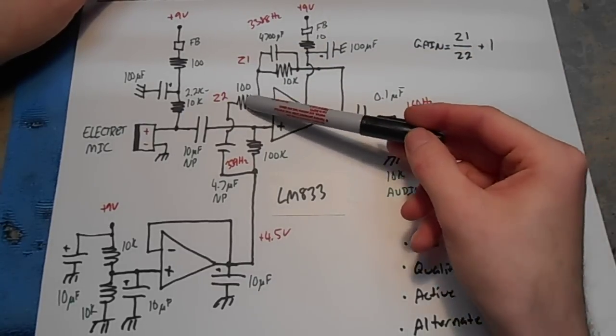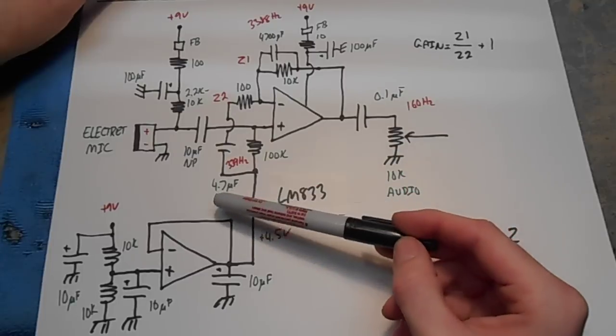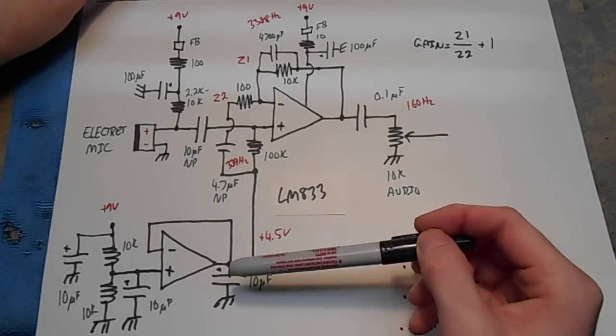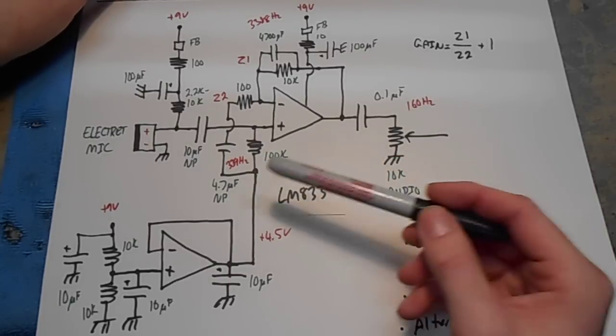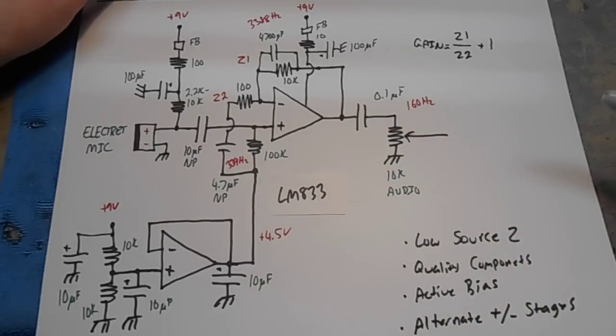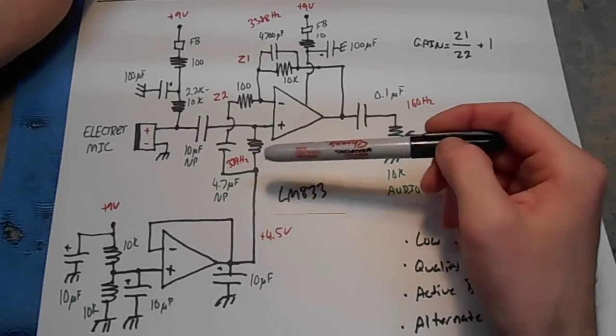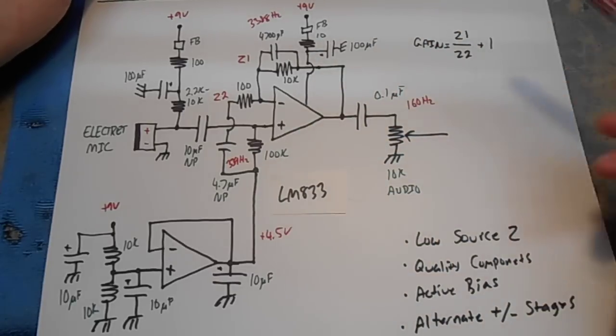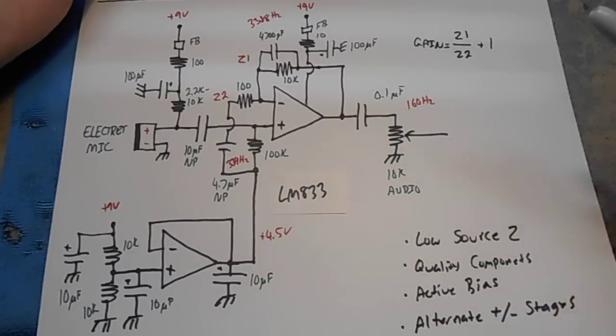Then on the other feedback impedance, we have a 100 ohm resistor in series with a 4.7 microfarad non-polarized capacitor. That will have a high-pass node at around 339 hertz. So as you can see by adding two components, two passive components, our op-amp will basically boost all the audio between 300 hertz and 3000 hertz. It'll start to roll off anything below that or above that.